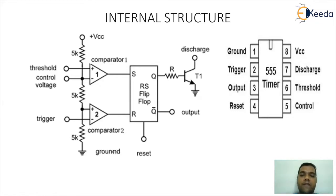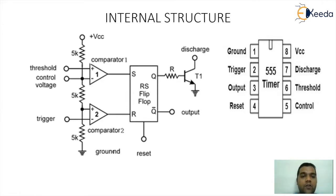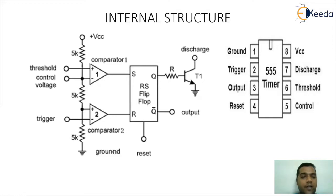Every comparator has two input points — a plus point and a minus point. For the lower comparator, the plus point is held with a drop of one 5 kilo ohm resistor, so that drop corresponds to one-third of VCC. The minus pin of the lower comparator is controlled using the trigger. Whenever the trigger signal goes below 1/3 of VCC, the lower comparator will give an output of 1. If the lower comparator gives output 1, the R pin of the flip-flop will receive 1.